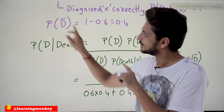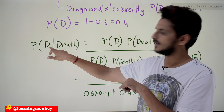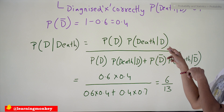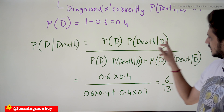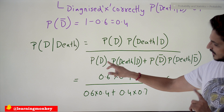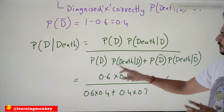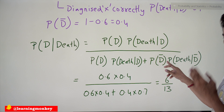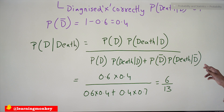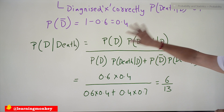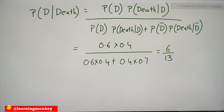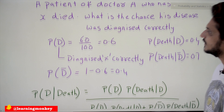If the patient has died, what is the probability he was diagnosed properly? Using Bayes theorem: probability of diagnosed properly × probability of death given diagnosed properly, divided by [probability of D × probability of death given D plus probability of D complement × probability of death given D complement]. Substituting the values, we get 6/13. This is how we use Bayes theorem to identify probability values in many cases.